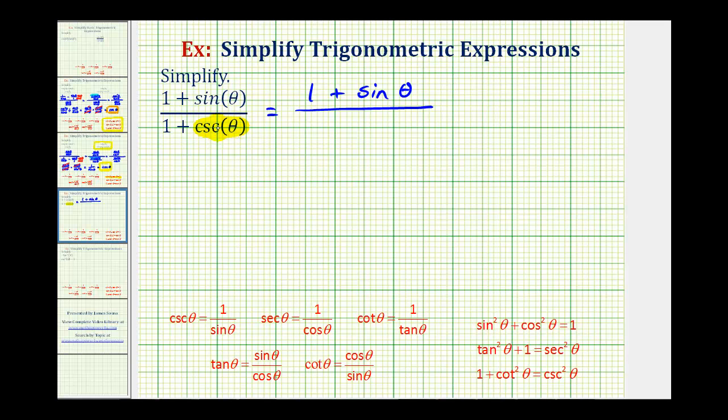because we're going to substitute one divided by sine theta for cosecant theta, so this will be a fraction, I'm going to go ahead and write one as one over one, and then we have plus one over sine theta.